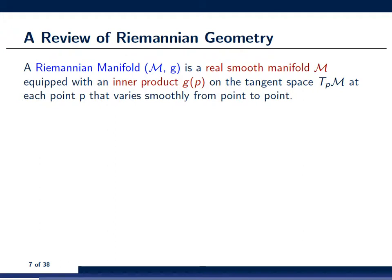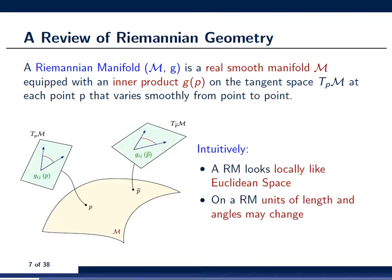First, I want to give a short review of Riemannian geometry. If you search for the notion of a Riemannian manifold on Wikipedia or Google, you find the following definition: a Riemannian manifold is a pair (M, g) where M is a real smooth manifold equipped with a scalar product, usually denoted G(p), defined on each tangent plane of the manifold, and this inner product must vary smoothly from point to point.